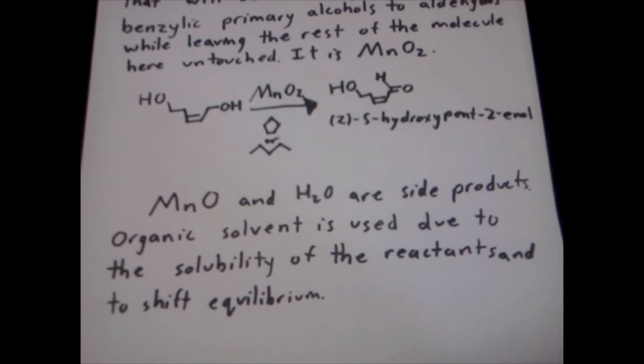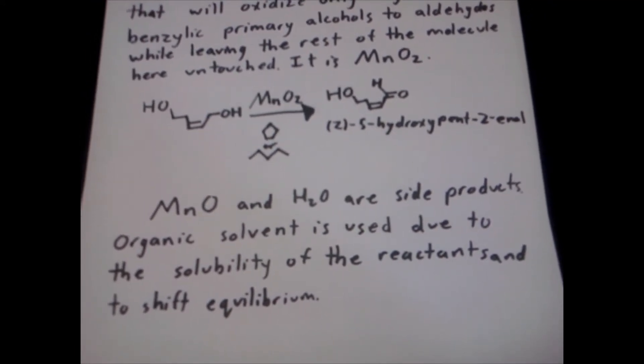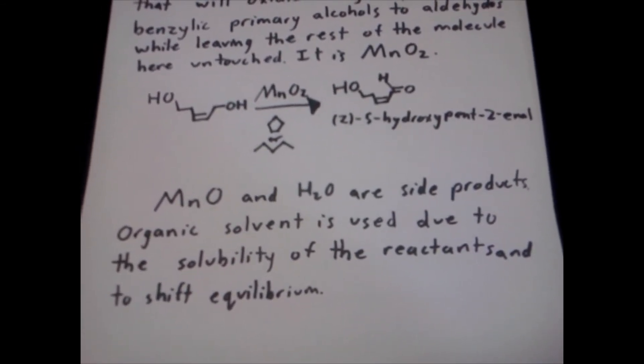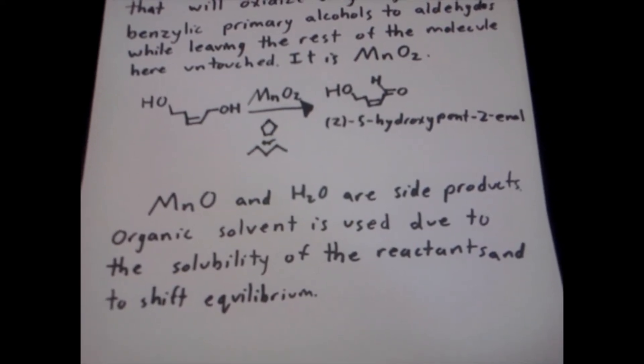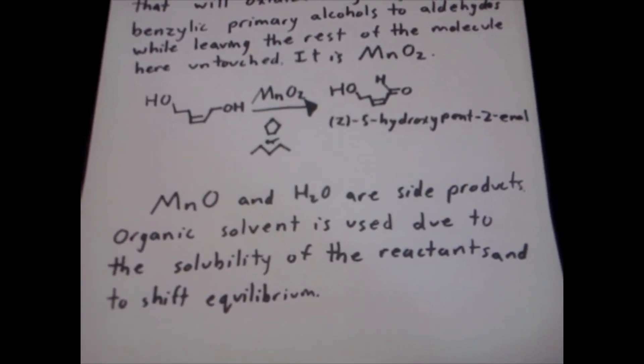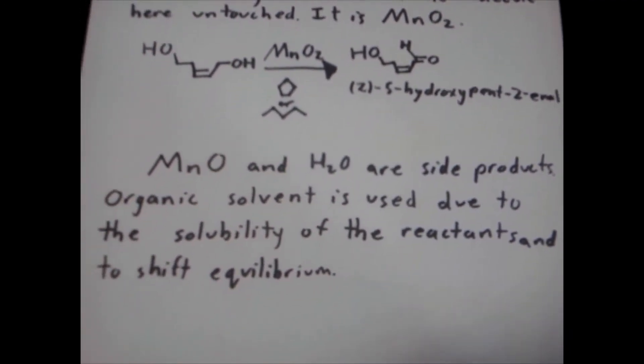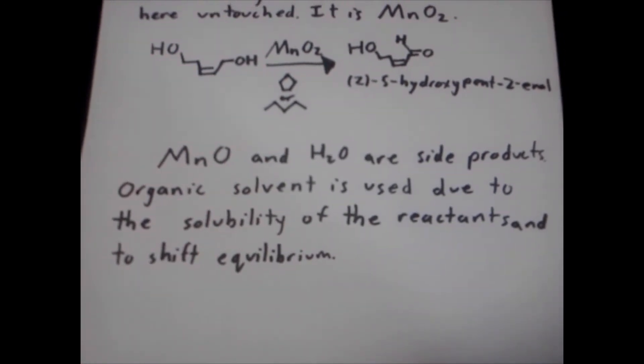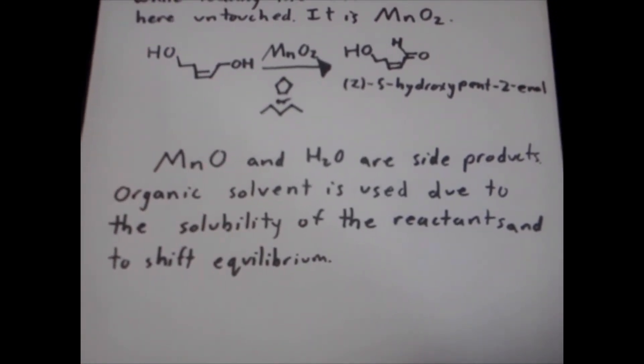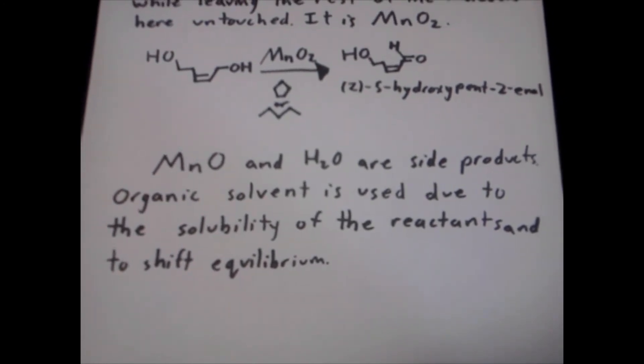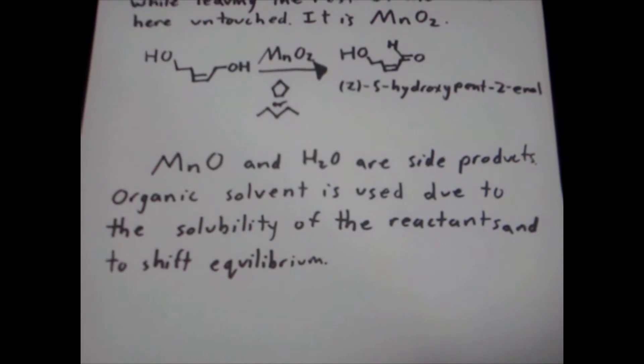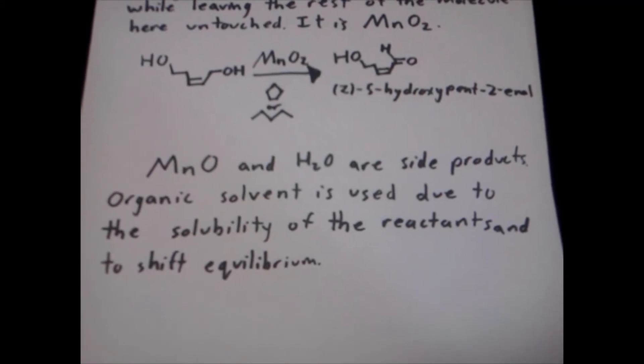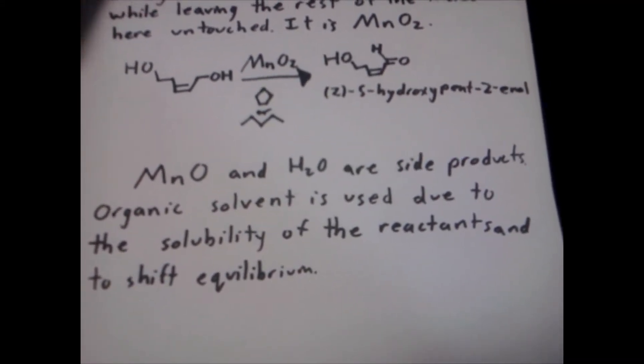Manganese oxide and water are side products. Organic solvent is used due to the solubility of the reactants and to shift the equilibrium. Since water is a side product, you don't want to have it in a water solvent because that will shift the equilibrium toward the reactants. This reaction would happen faster in an organic solvent because the equilibrium is already trying to push things toward the products. If you release water, the water will automatically sink to the bottom of the reaction because water is not soluble in an organic solvent. And because of that, it will be constantly removed, pushing things toward completion.